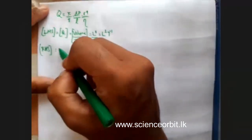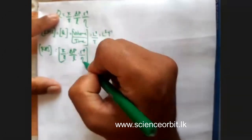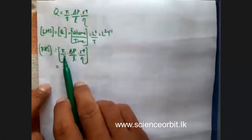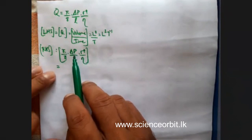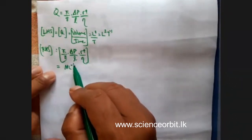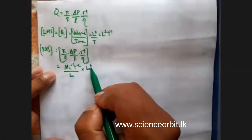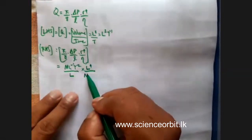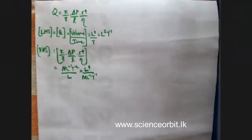Let's go to the right-hand side. When you take the dimension of the right-hand side, pi over 8 is a constant. Delta P is pressure — for that I will put ML⁻¹T⁻² divided by length L. R is also another length, so it is L to the power 4, divided by eta, which is the coefficient of viscosity. That we derived already in the previous tutorial.